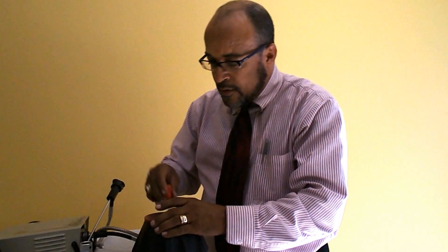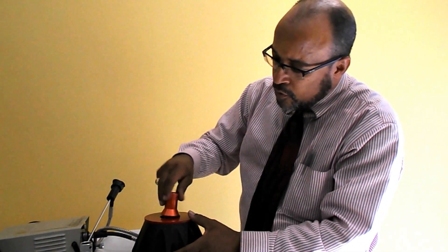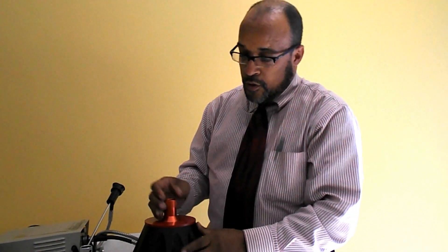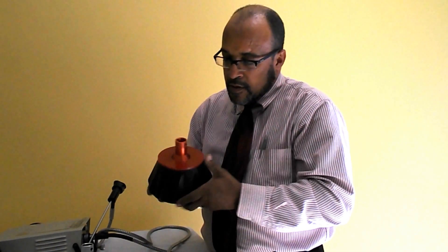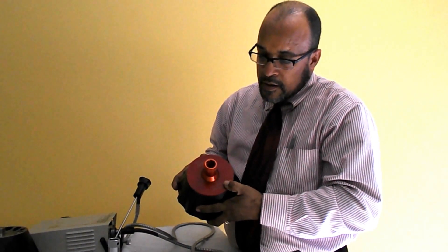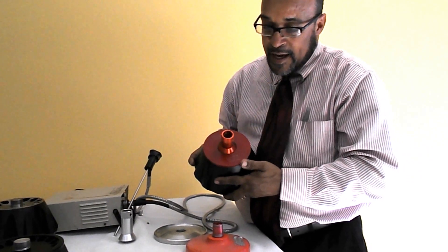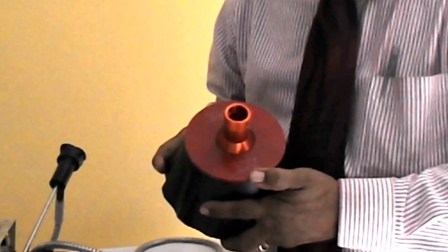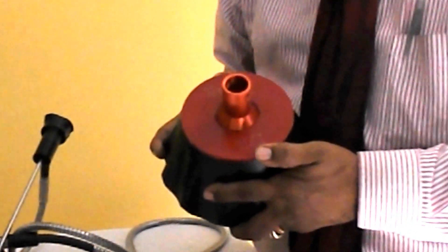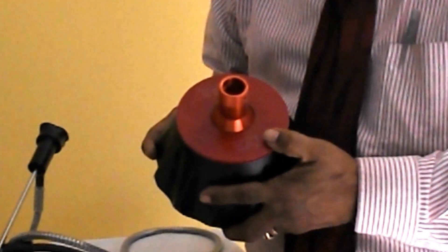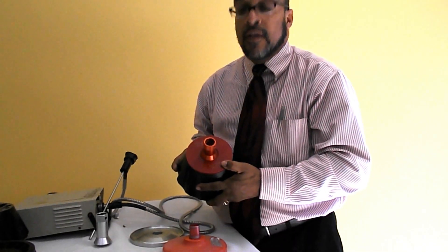We have our titanium rotor which is the type 70.1 rotor which goes up to 70k. In the name of the rotor, you will have the speed designation. Like this, it is a type 70.1 Ti, which means that it goes up to 70k. And it is a Ti for titanium.